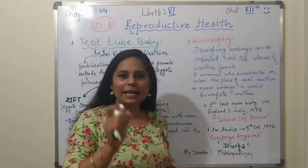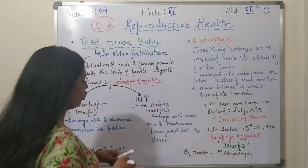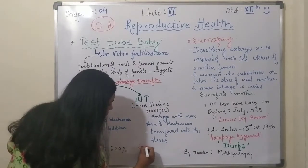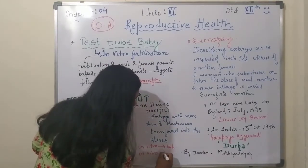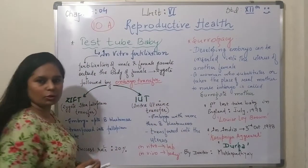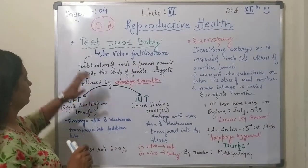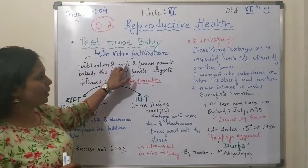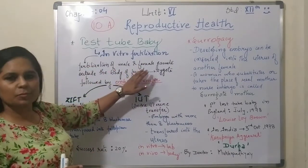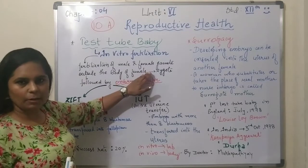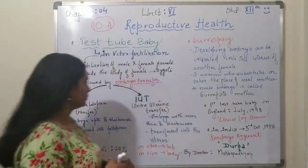Test tube baby is called in vitro fertilization. In vitro means in laboratory condition. You will come across two words here: in vitro, which is in laboratory condition, and in vivo, which is inside the body of the female itself. These two terms you have to understand. In the test tube baby or in vitro fertilization technique, fertilization of male and female gametes — sperm and ova — happens outside the body of the female.